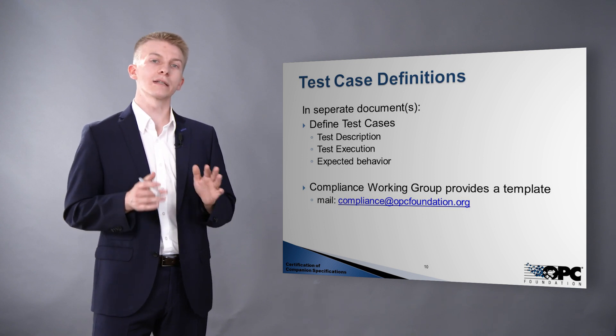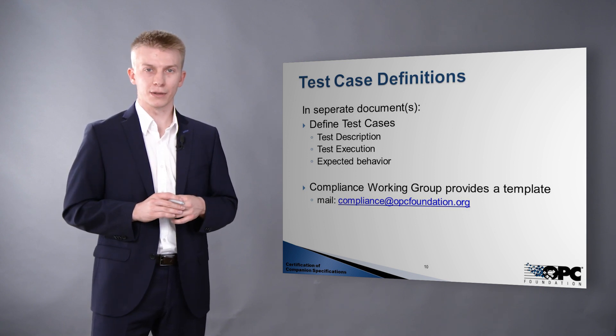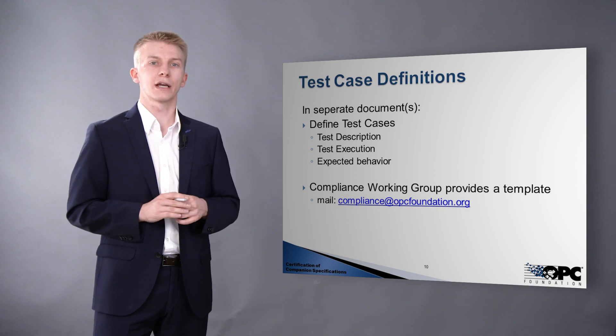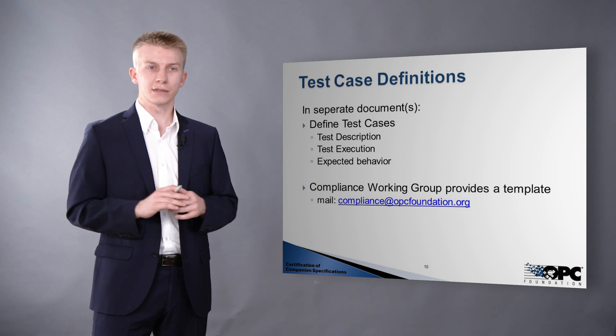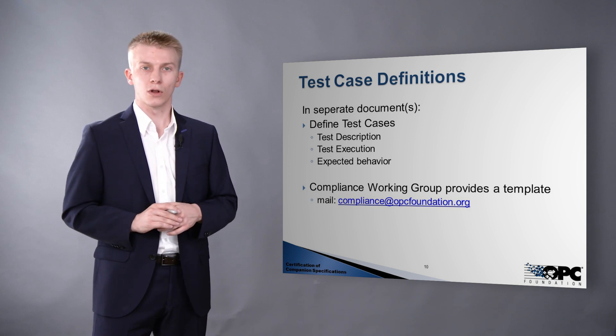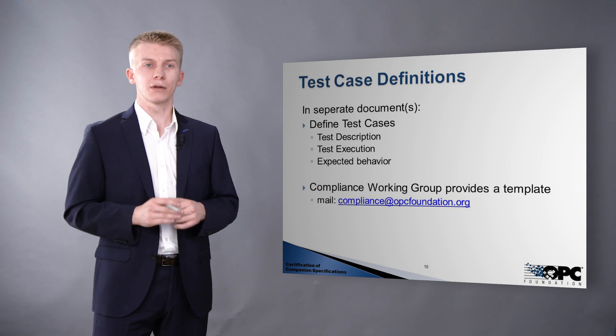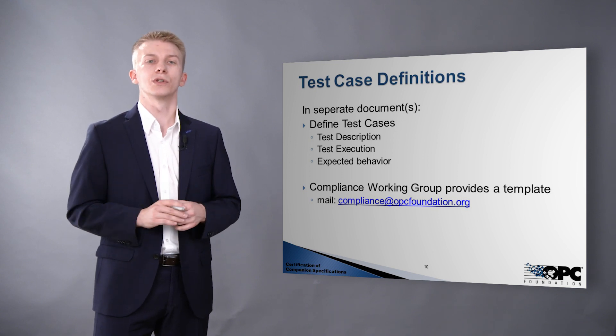Test cases are within a conformance unit. For test case definitions you get a separate document — an Excel sheet — which is not inside the companion specification. A test case definition consists of the description, the test execution, and the expected behavior. An example would be verifying operation limits, where the test execution is reading the operation limits, creating a service call that makes use of those limits, and verifying with the expected behavior that everything succeeds. The compliance working group maintains the template for defining test cases, and when you send a mail to compliance@opcfoundation.org, we are happy to map it to your companion specification.